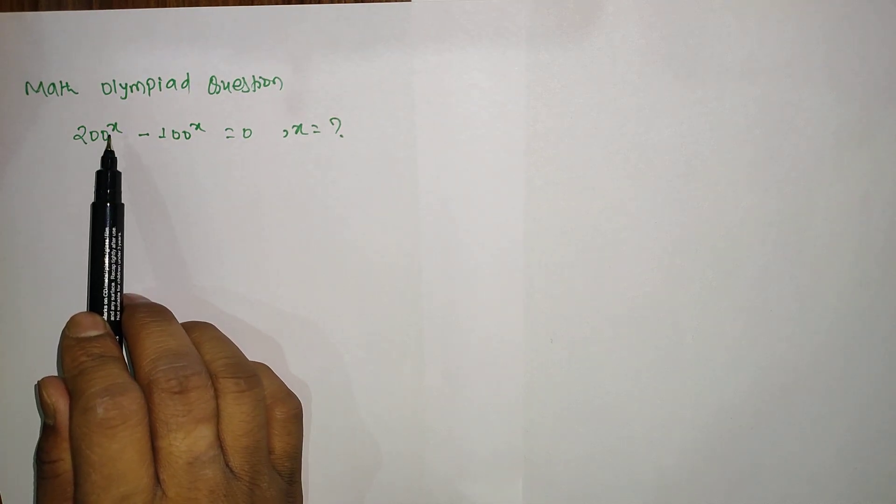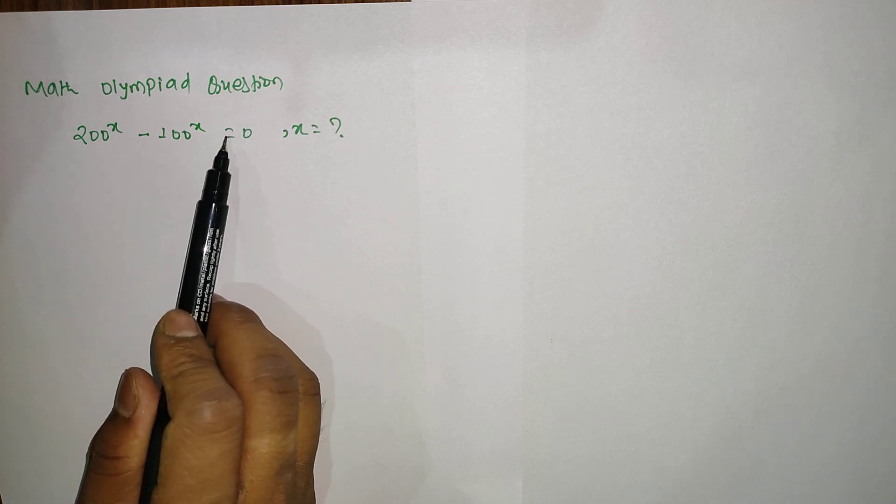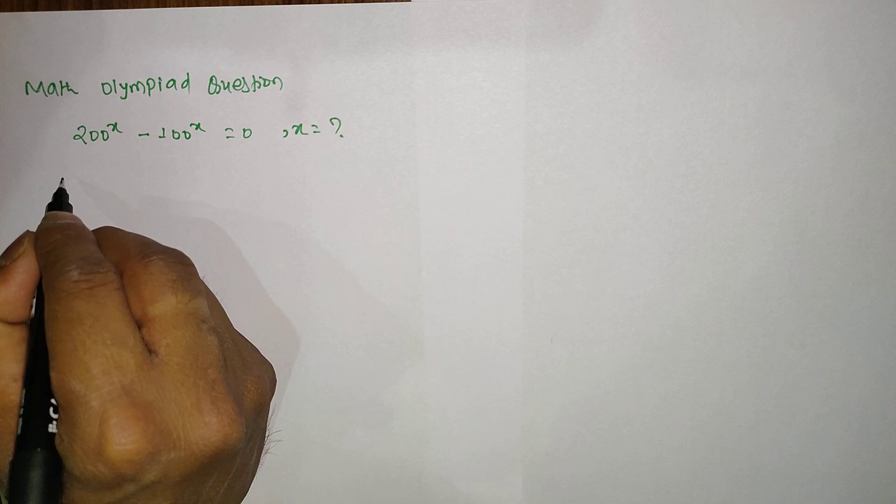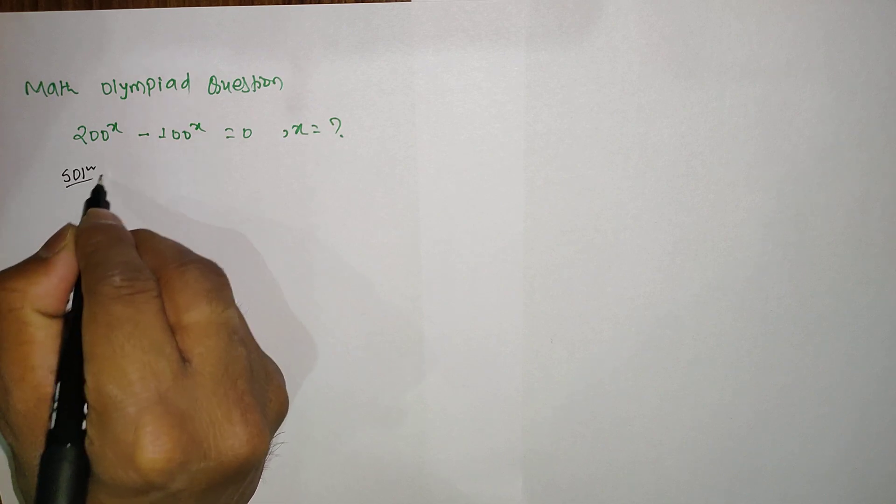Today in this video we have a math Olympiad question where it is given that 200^x - 100^x = 0, and we have to find the value of x. So let's get into the question and find the solution.